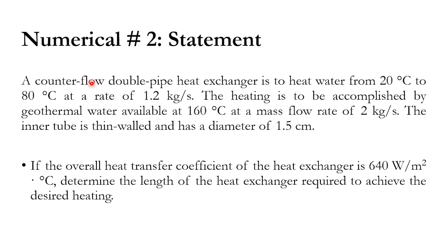Numerical number 2: A counter-flow double-pipe heat exchanger is to heat water from 20°C to 80°C at a rate of 1.2 kg/s. Heating is accomplished by geothermal water available at 160°C at a mass flow rate of 2 kg/s. The inner tube is thin-walled with a diameter of 1.5 cm. The outlet temperature of the hot geothermal stream is not given.